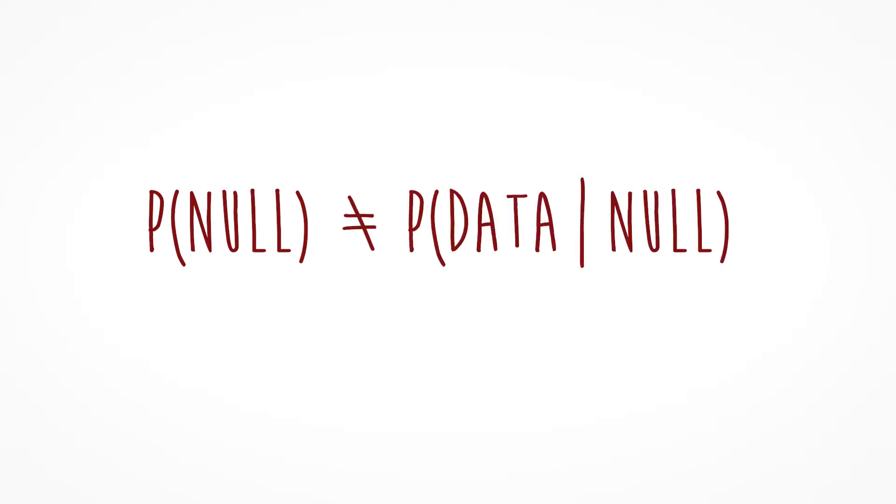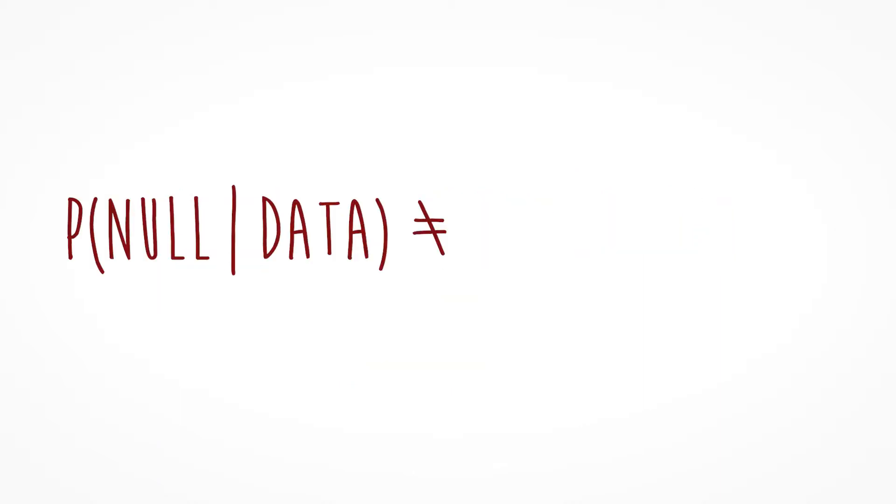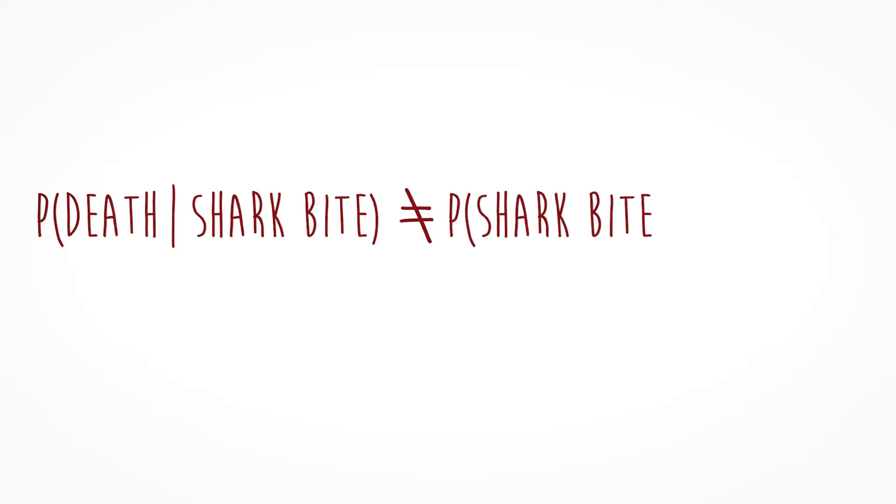A p-value is the probability of the data given the null — that is NOT the same as the probability of the null given the data, which is what we actually want to know. Think of it this way: the probability of death given that you've been attacked by a shark is not equal to the probability of being attacked by a shark given that you are dead. If you are dead, it's very unlikely you were killed by a shark. But if you've been attacked by a shark, the probability you will die isn't all that small. These two quantities are not the same.